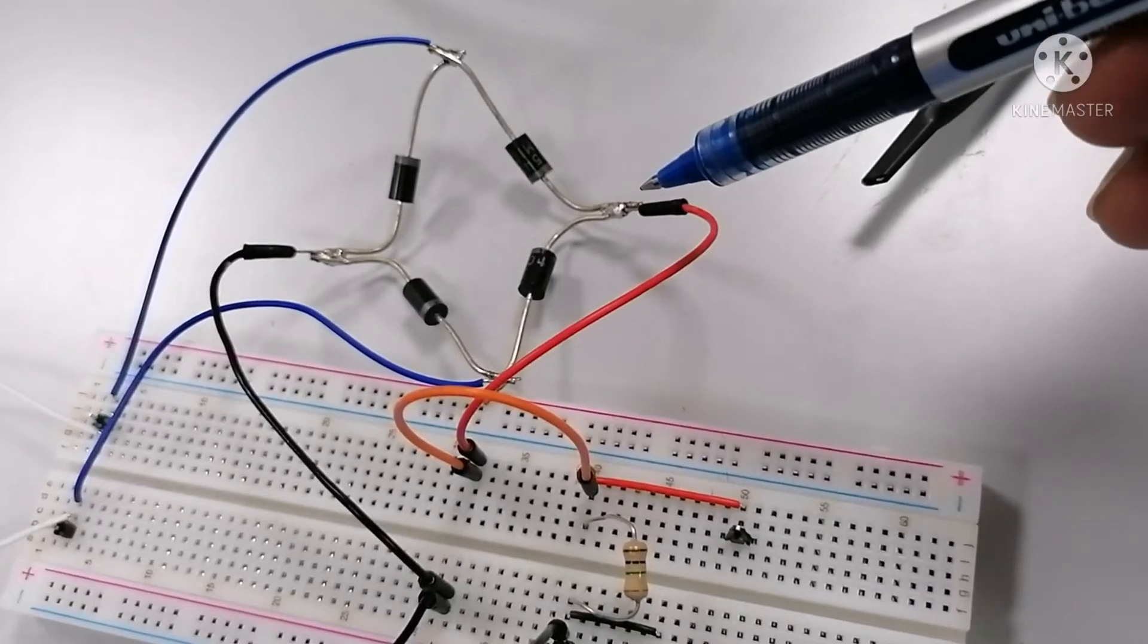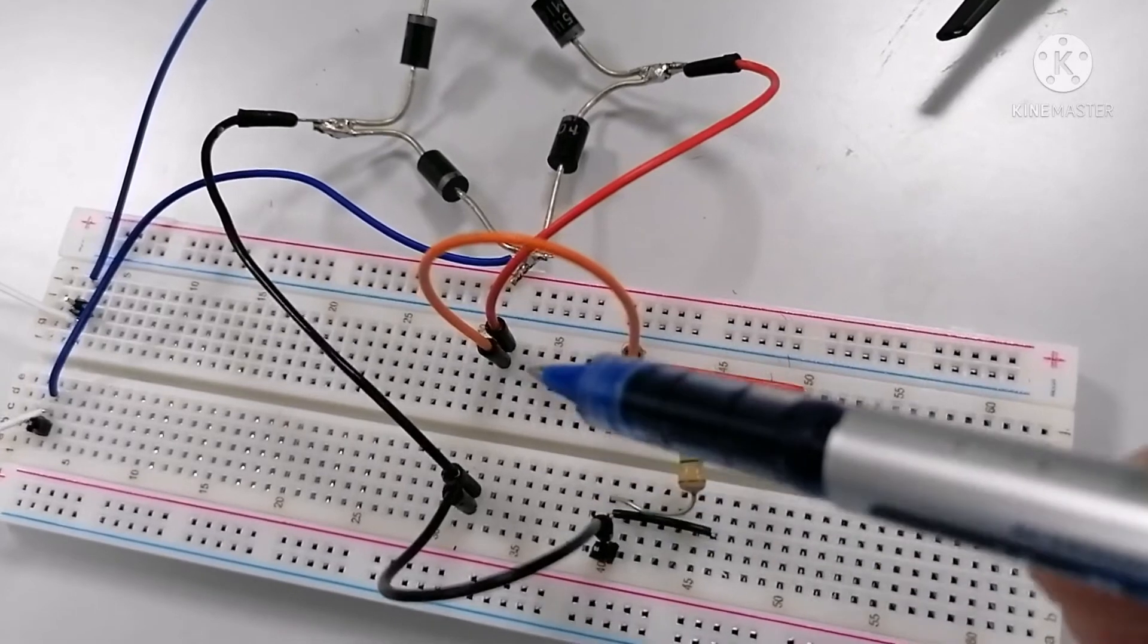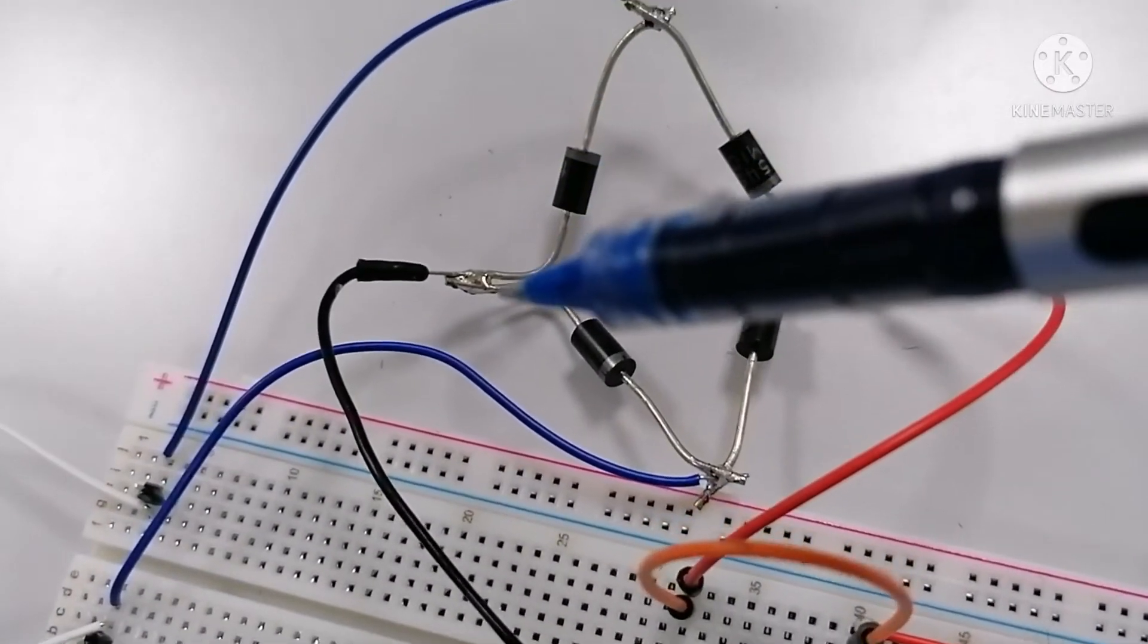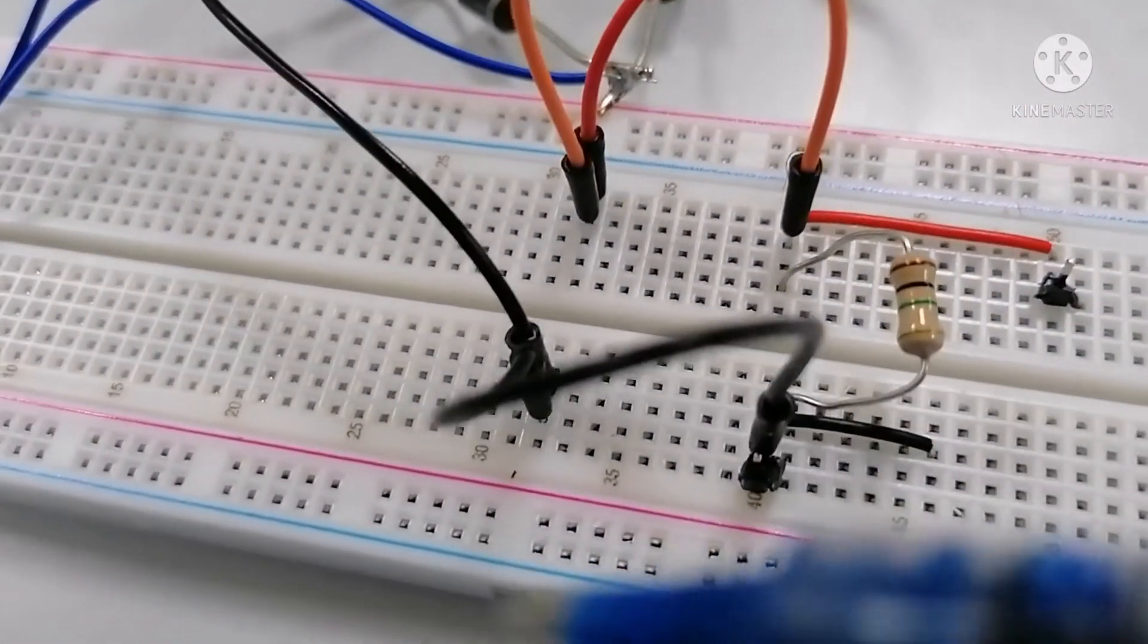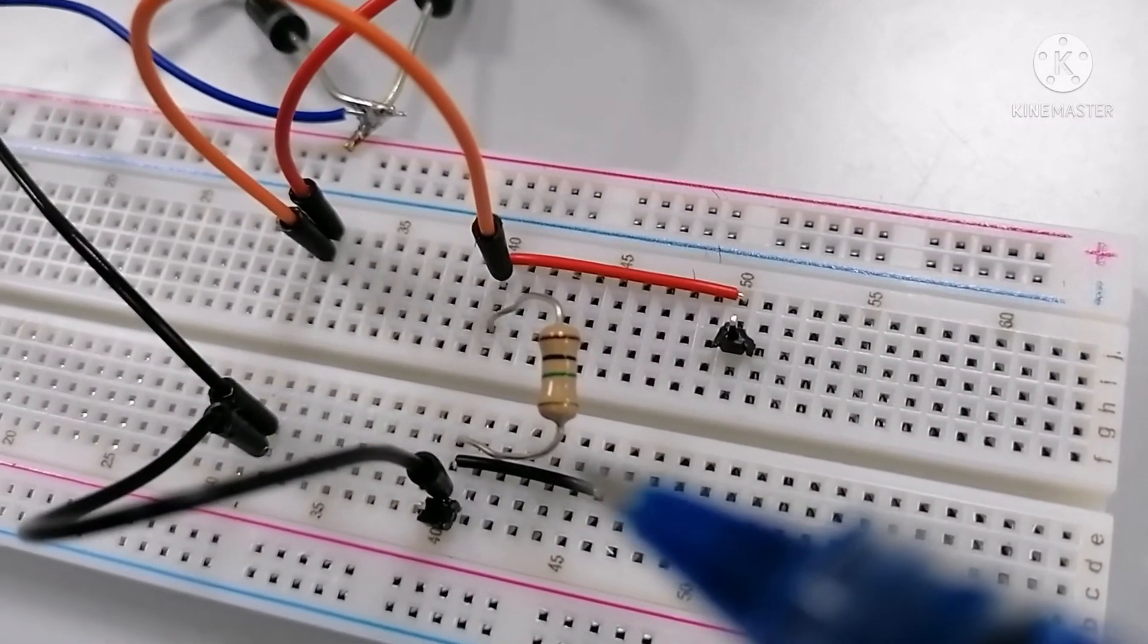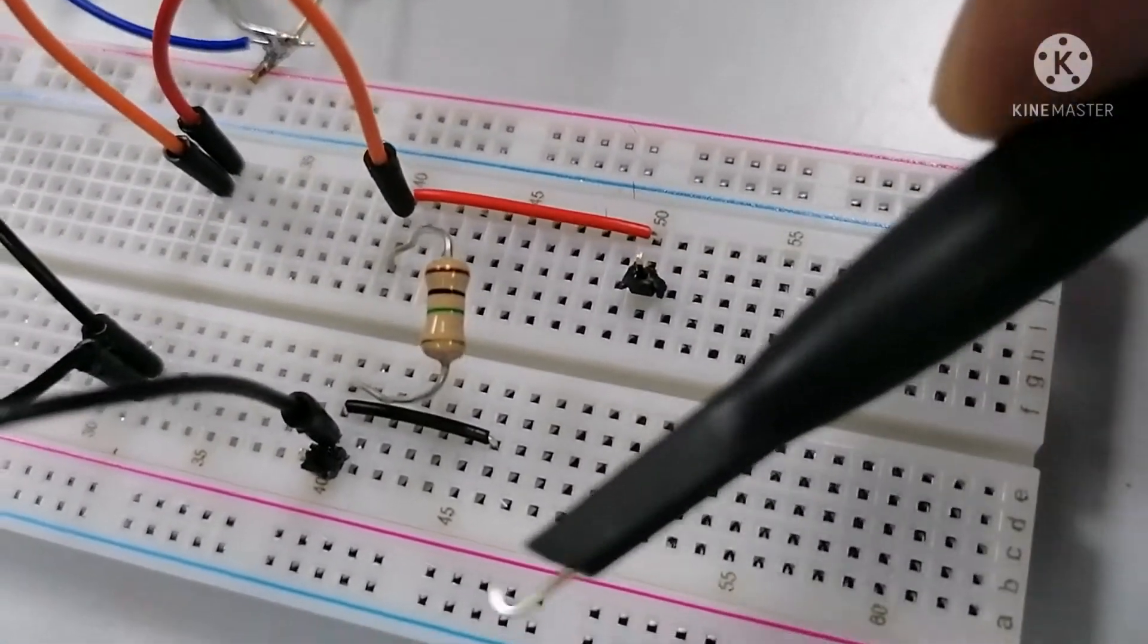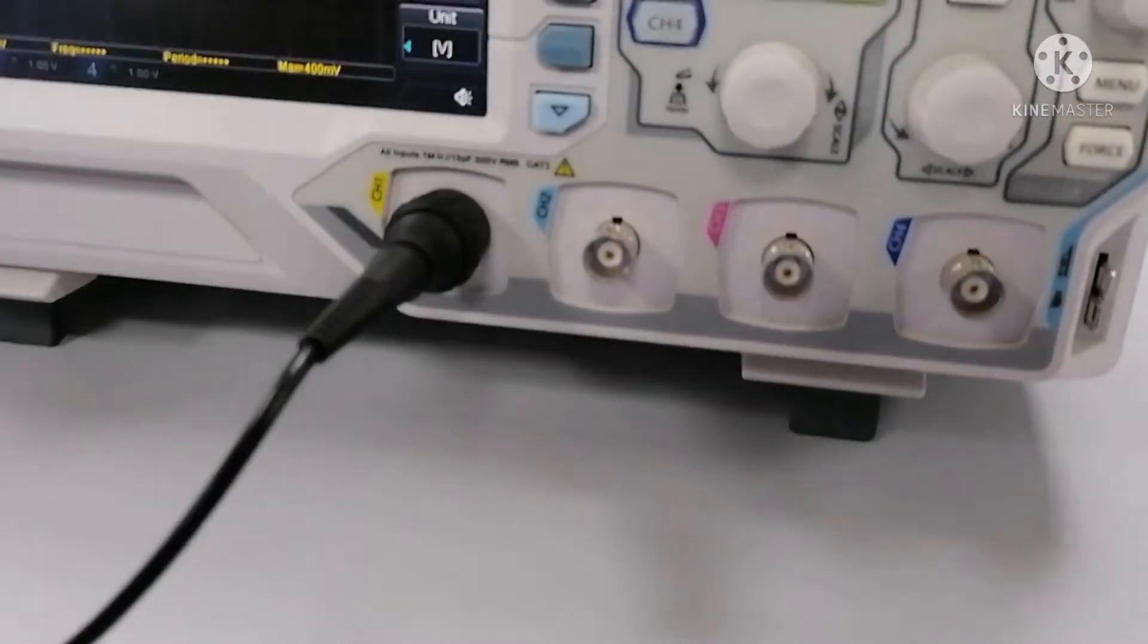So since this is our positive, it is running over here and here. This is our load resistor. And the negative side of the bridge rectifier is going through here and here, up to the load resistor. Now I will put this probe. This is positive and this is negative side.